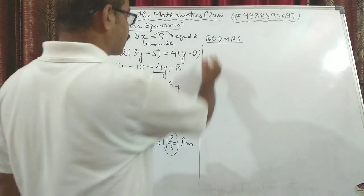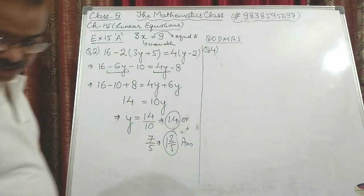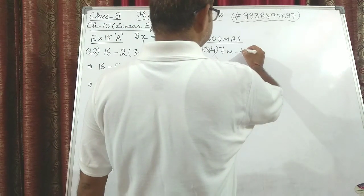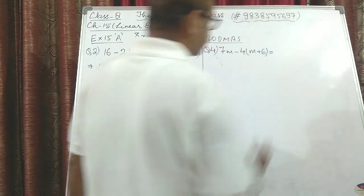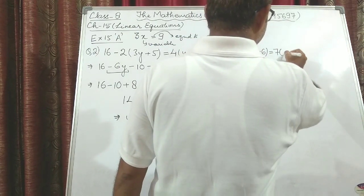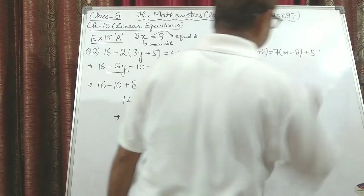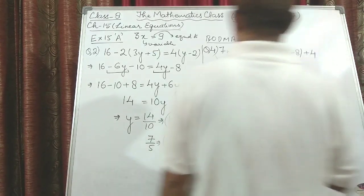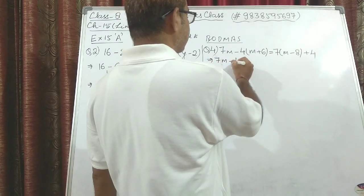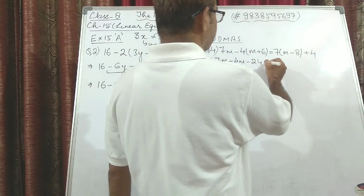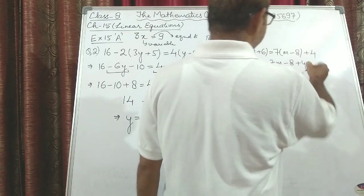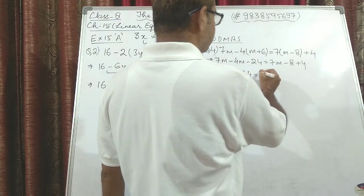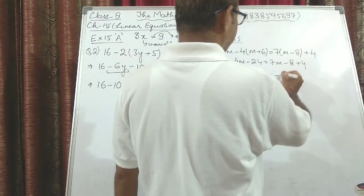Now we move to question number 4: 7m − 4(m + 6) = 7(m − 8) + 4. Applying BODMAS, we open the brackets: 7m − 4m − 24 = 7m − 8 + 4.